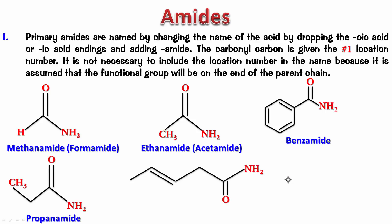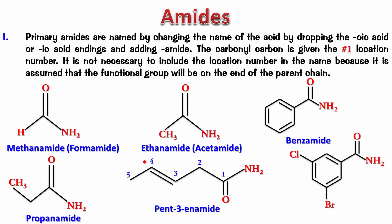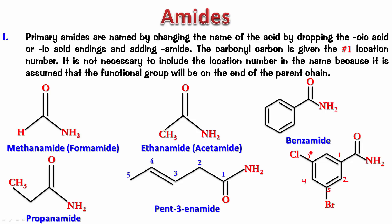What is the name of this one? Counting the carbons: 1, 2, 3, 4, 5. So which acid is it? It is pent-3-enoic acid, giving pent-3-enamide. Next example: this acid is basically benzoic acid, but with a bromo and a chloro substituent. The carbonyl carbon is automatically number 1. We number to give bromo the lower locant — bromo comes before chloro alphabetically, so bromo gets position 3 and chloro gets position 5. So it is 3-bromo-5-chlorobenzamide.